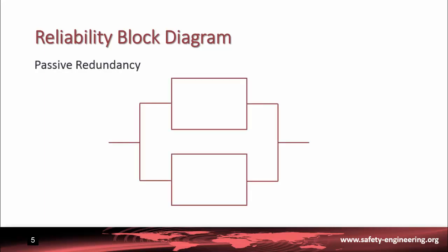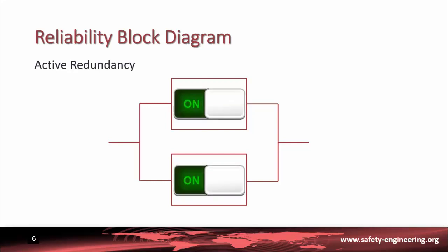We can have passive redundancy, which means that the redundant unit is off and only goes on if the main unit fails. We can also have active redundancy, which means that all units are working at the same time.